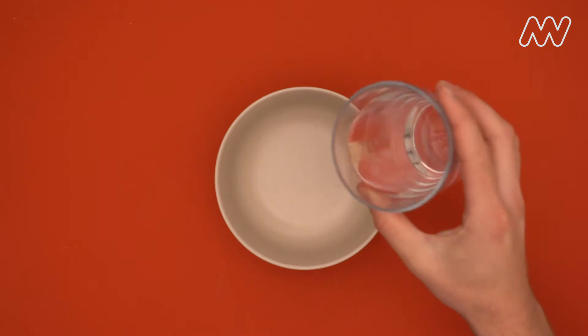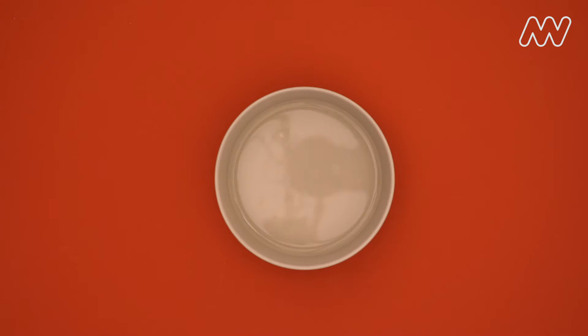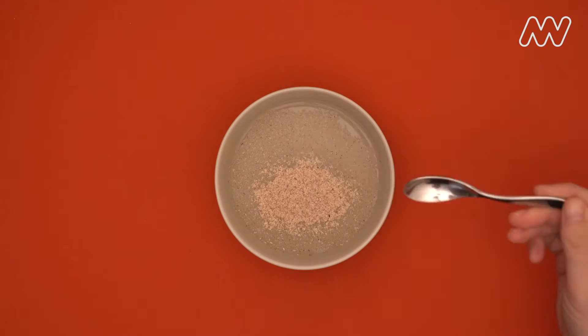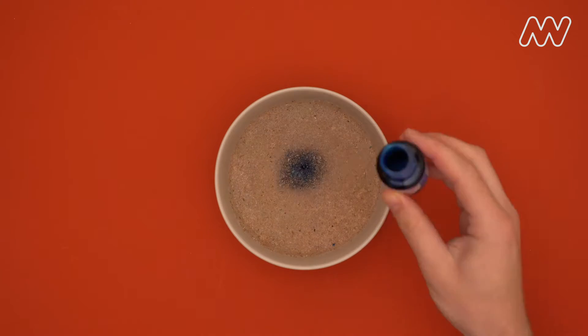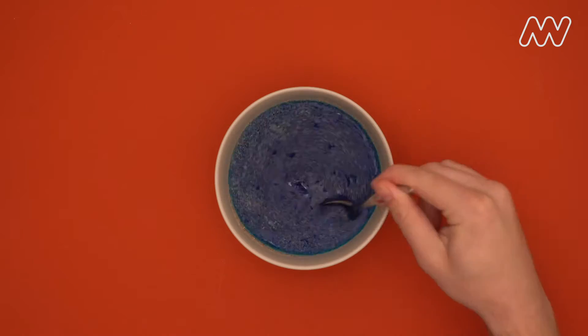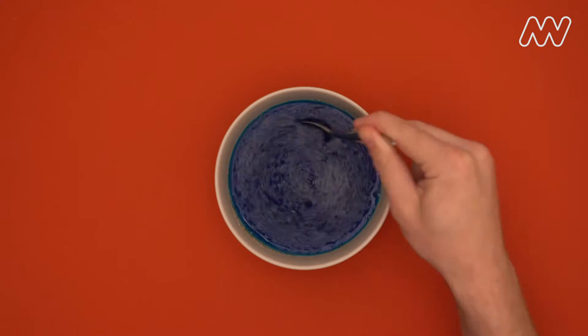Start by adding a cup of water to your bowl, followed by about a teaspoon of psyllium husk and a couple of drops of food dye. Give it a stir. Notice anything strange happening with the texture.